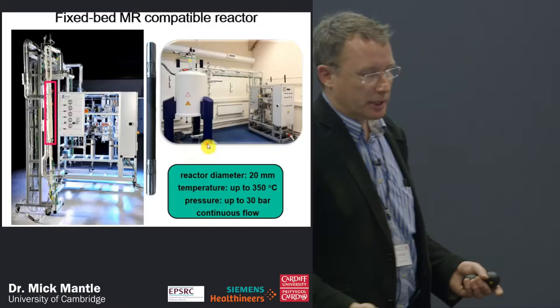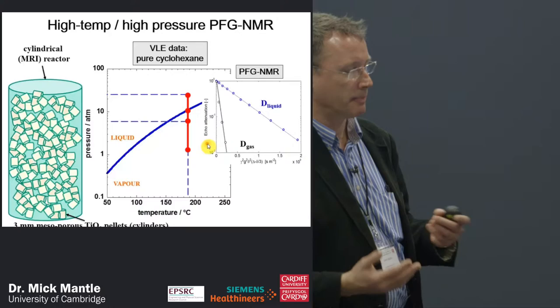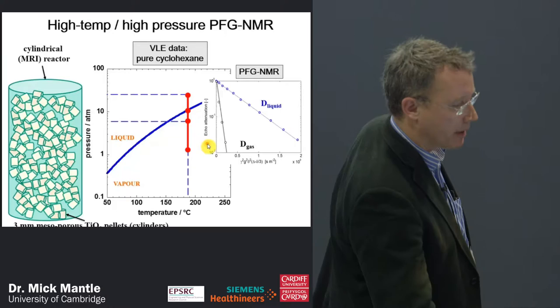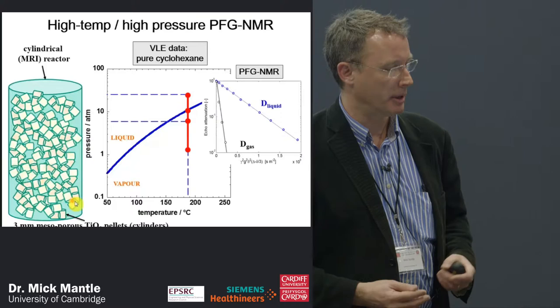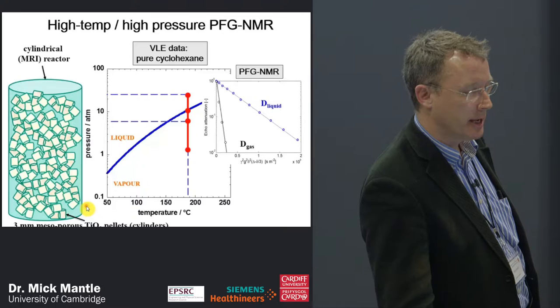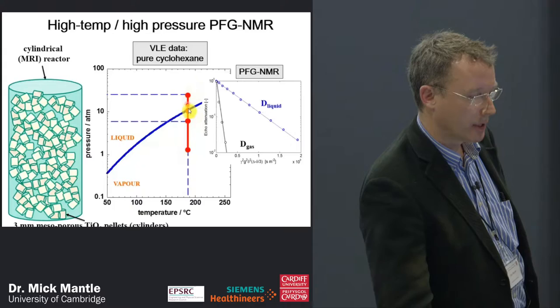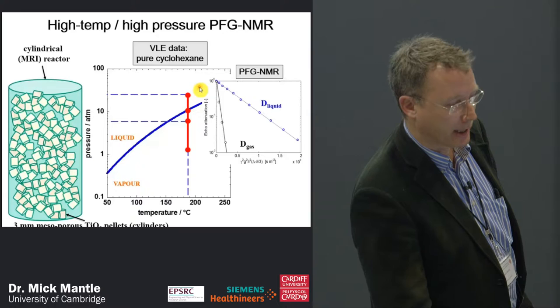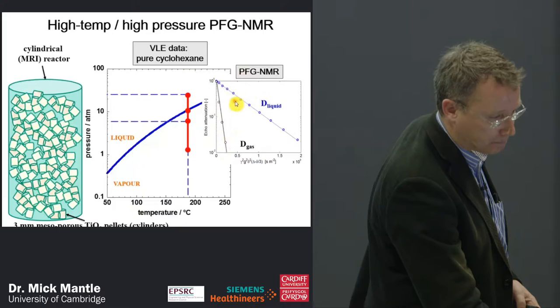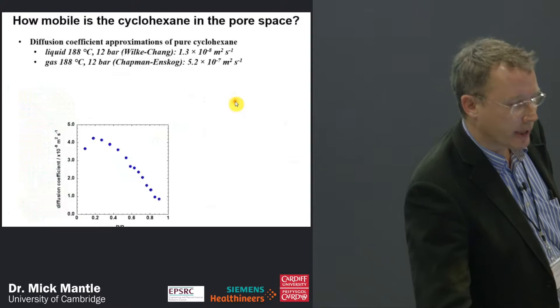Initially, we wanted to do some simple vapor-liquid equilibrium experiments as new ground for us. We used pure cyclohexane in a packing of titania pellets — 3 mm mesoporous cylinders — heated to 188 degrees C, varying the pressure. This is analogous to looking at an adsorption isotherm, and we wanted to know whether measuring diffusion of the whole bed would give liquid-like or gas-like diffusion values, given there can be four orders of magnitude difference between the two.